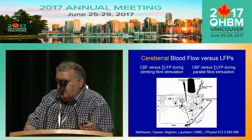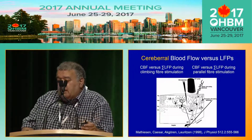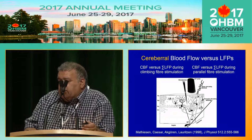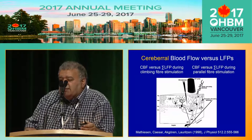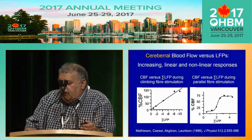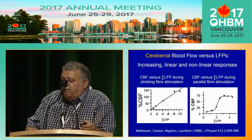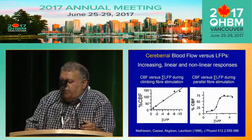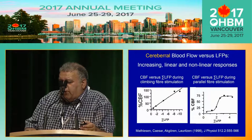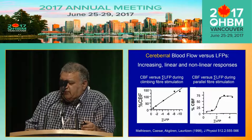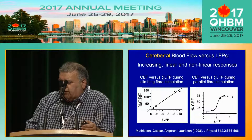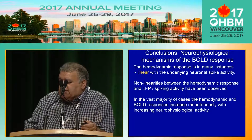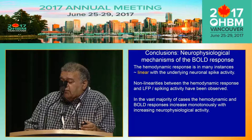Similarly, from a classical paper from the Lauritzen group in the cerebellum, stimulation of the climbing fibers and parallel fibers during neurophysiological recordings from Purkinje cells and laser Doppler shows that stimulation of climbing fibers causes a linear increase in cerebellar blood flow as a function of local field potential. Stimulation of parallel fibers causes a monotonous, more sigmoidal increase relative to local field potential. So the hemodynamic response in many instances is approximately linear with the underlying neuronal spike activity.